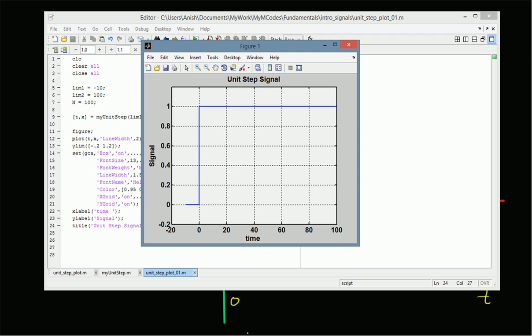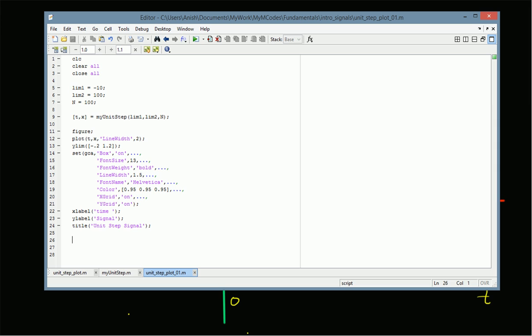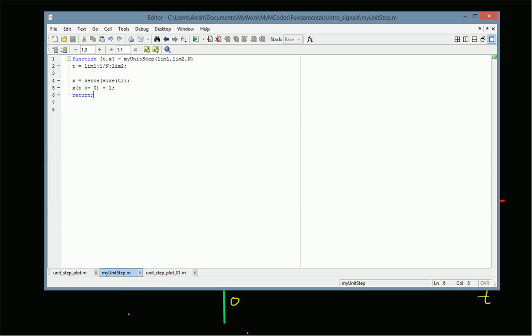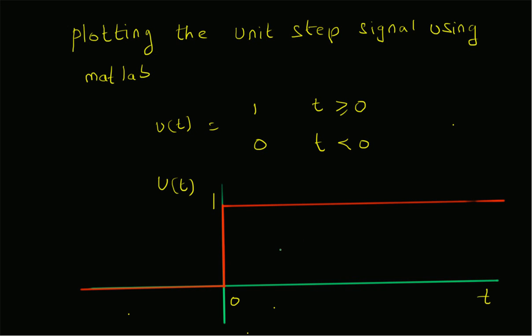To summarize, in this video we looked at plotting the unit step signal using MATLAB. The unit step signal is defined as one for t greater than or equal to zero and zero for t less than zero, with a discontinuity at zero. We wrote a MATLAB script and a reusable function called my_unit_step based on this definition, plotted the result, and confirmed a perfect agreement with the analytical plot. Thanks for watching.